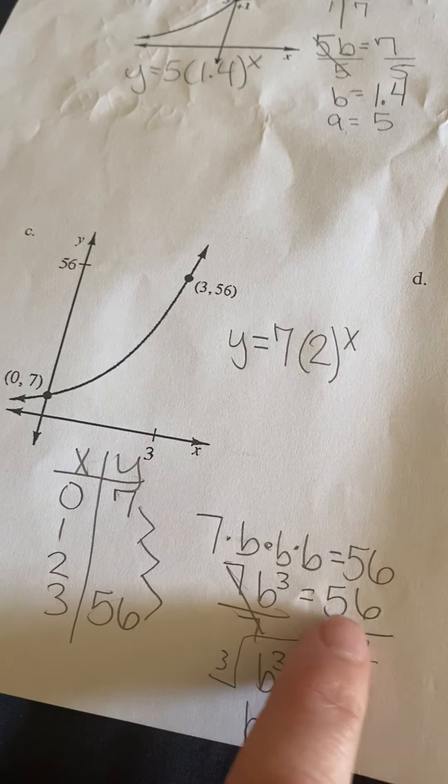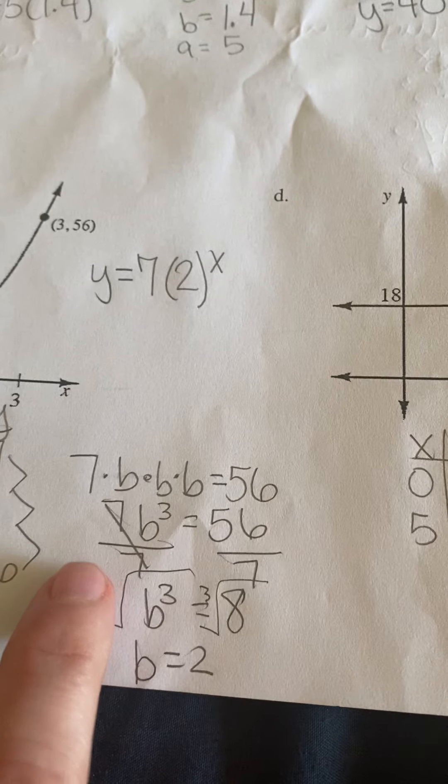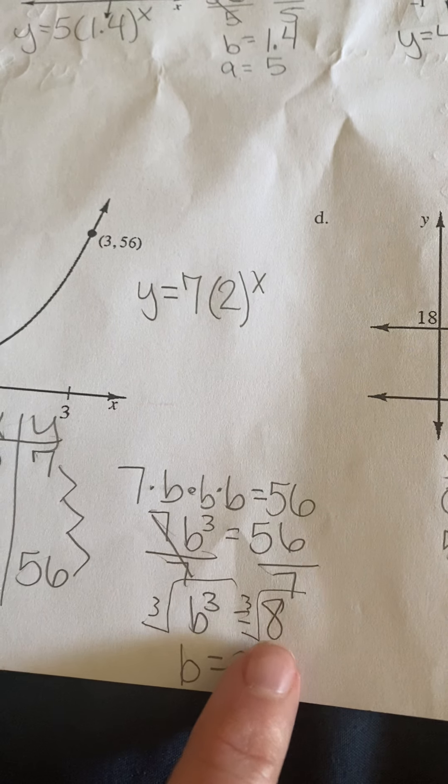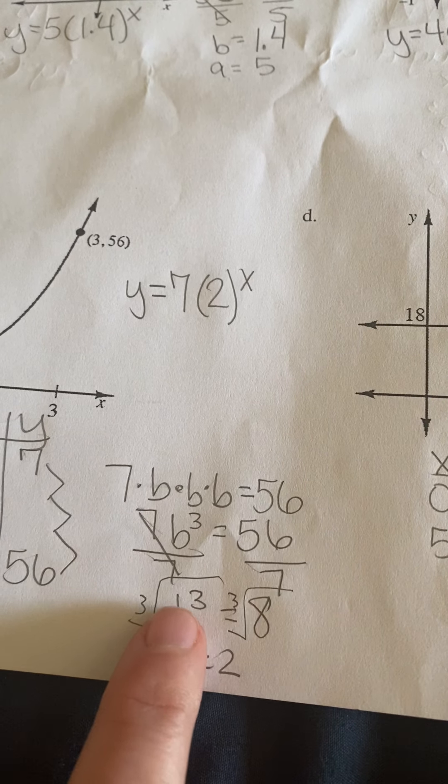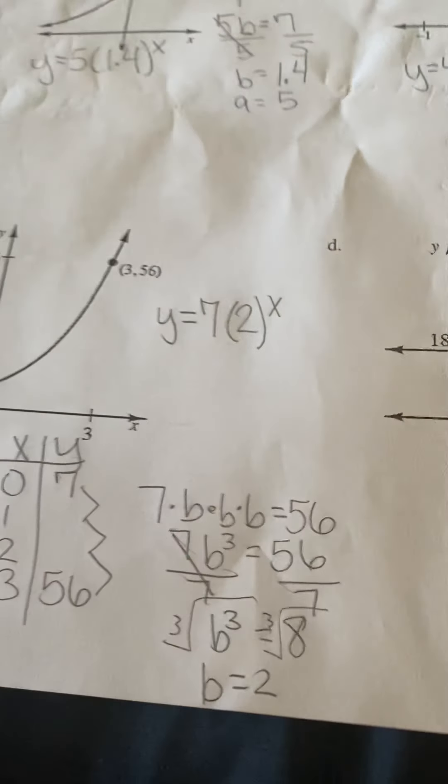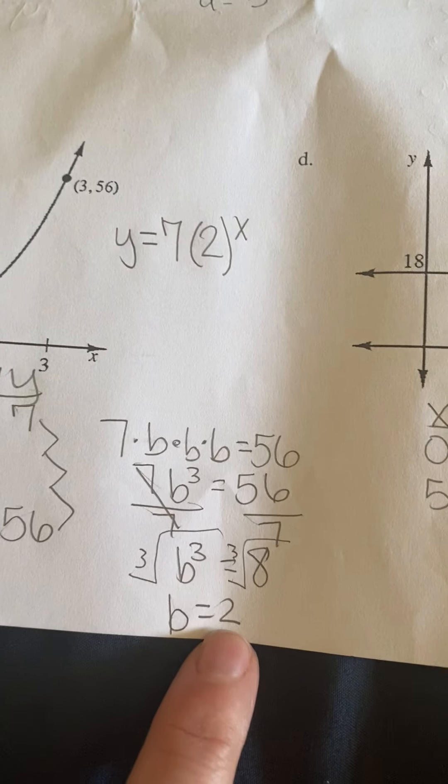So 7 times b to the 3rd equals 56. From there you can solve the equation. Divide both sides by 7: b to the 3rd equals 8. And then, it's to the 3rd, so you've got to think cube root. What times itself times itself gives you 8? And that is 2.